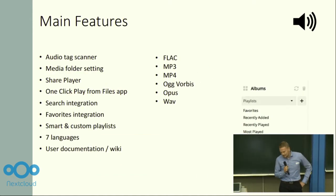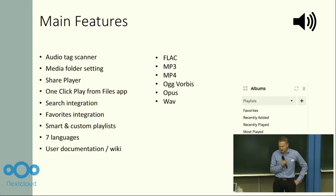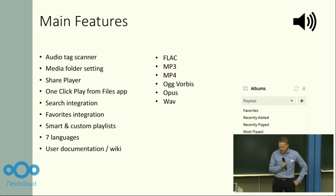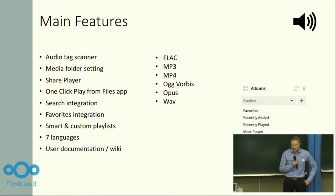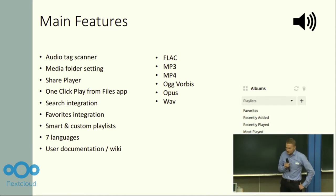The audio player itself has all the features you would expect: all the major MIME types — MP3, FLAC, whatever you need. Standard features like ID3 tagging, media folders, NextCloud integration, integrating into the share dialogues with the share player. It's integrated into the files app so you can play audio files directly with one click, plus search integration, favorite integration, smart playlists — everything you would expect.